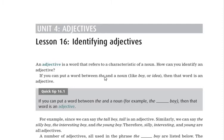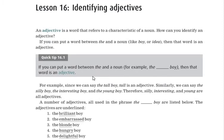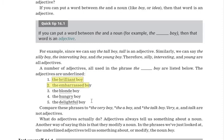A tip for when you're confused whether a word is a noun, adjective, or verb: add 'the', then the specific word, then a noun — like 'the boy'. For example: 'the brilliant boy', 'the embarrassed boy', 'the delightful boy' — all the underlined words are adjectives. But we can't say 'the very boy' or 'the talk boy' — those are grammatically incorrect.